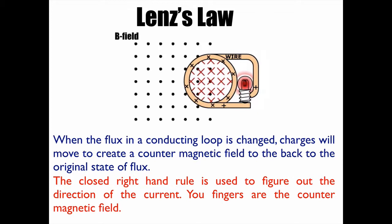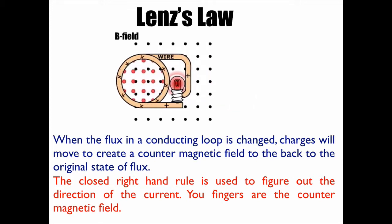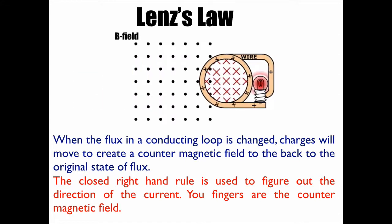So I can look at it this way, with the field, and here it creates what it's losing. So with Lenz's Law, you're always trying to get back to the original amount of flux.